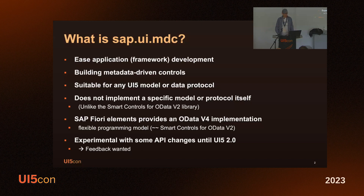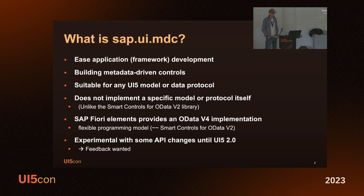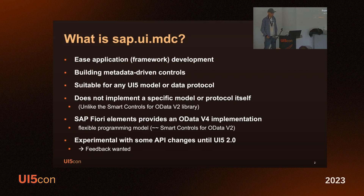As Stefan mentioned, one of the things we got as feedback for the old smart controls was that people liked them a lot. But they were tied to the old OData V2 model, and we heard quite a few times that it would be nice to have a smart table combined with a JSON model, for example.